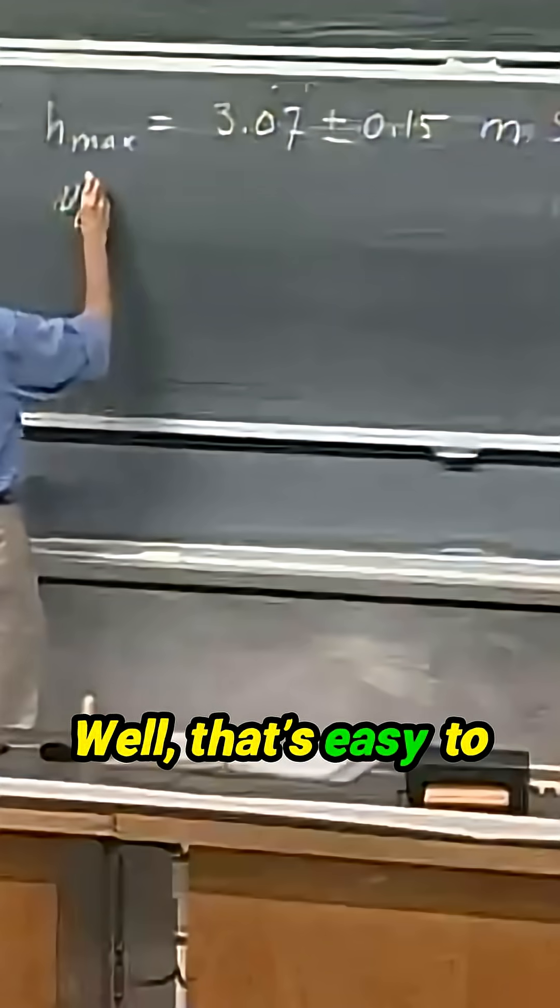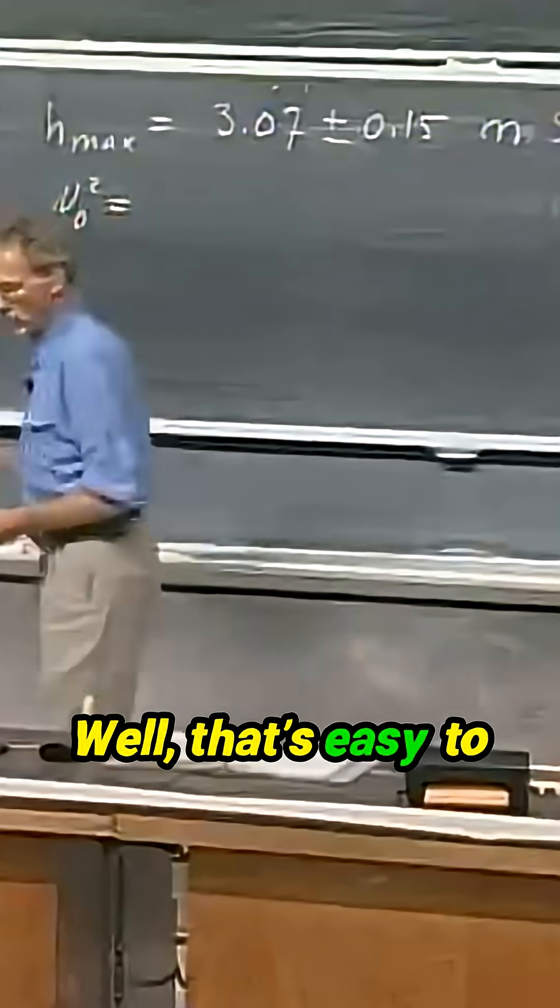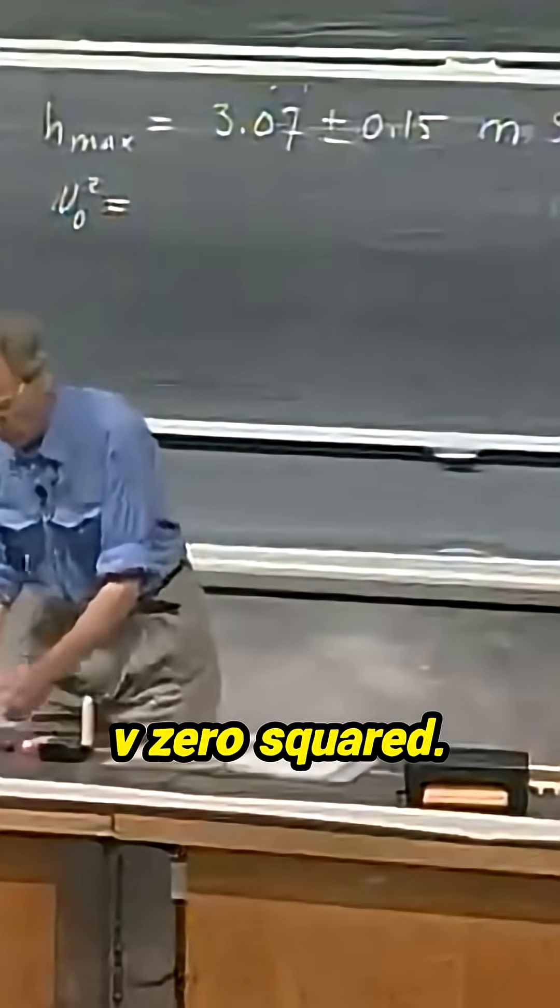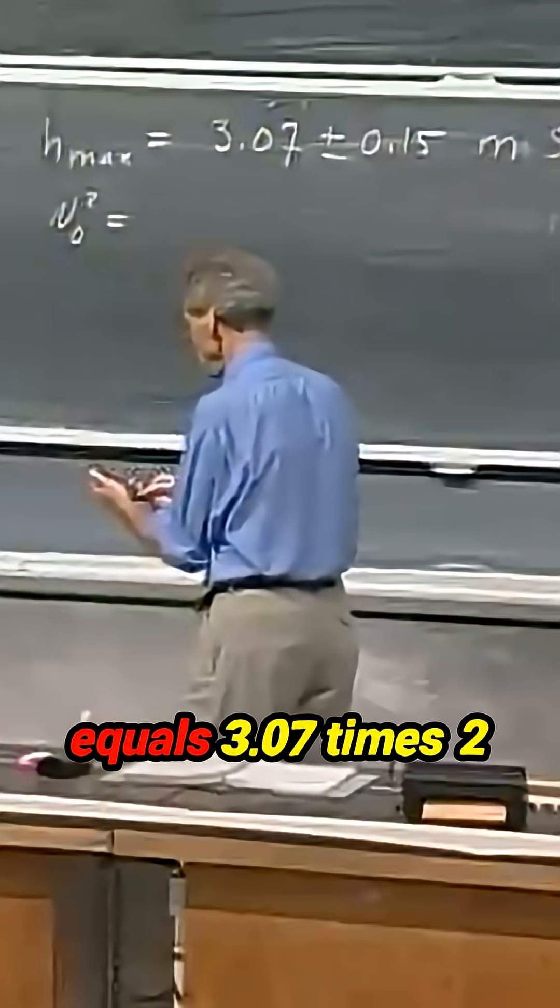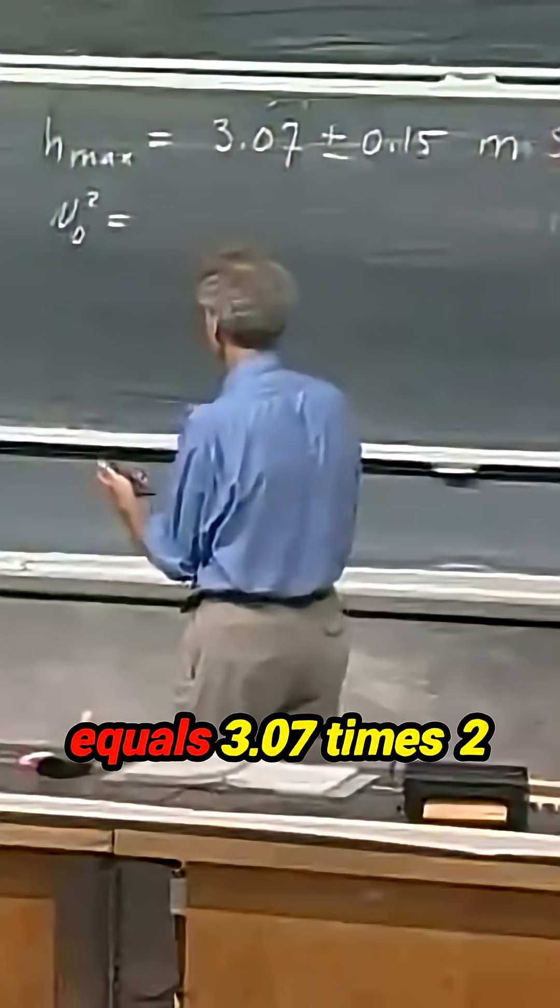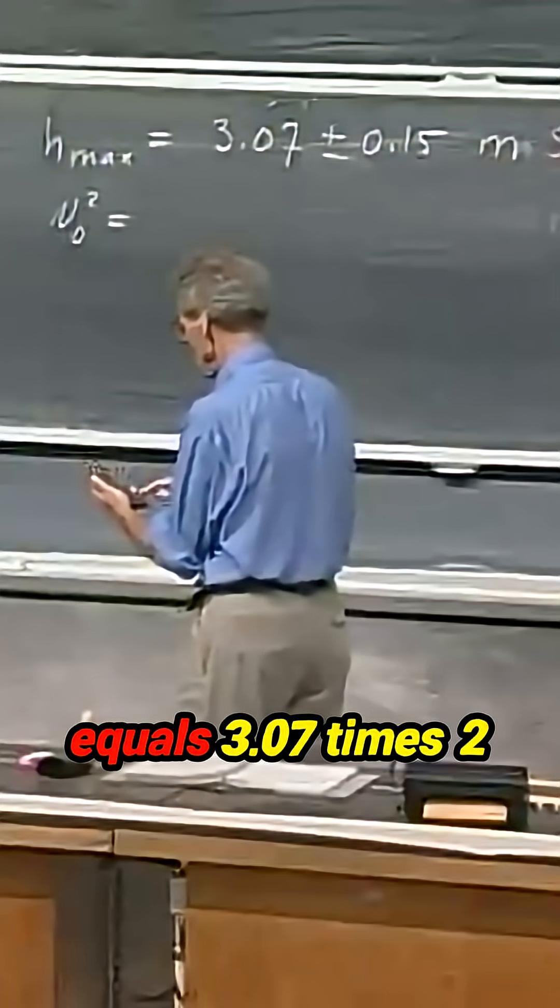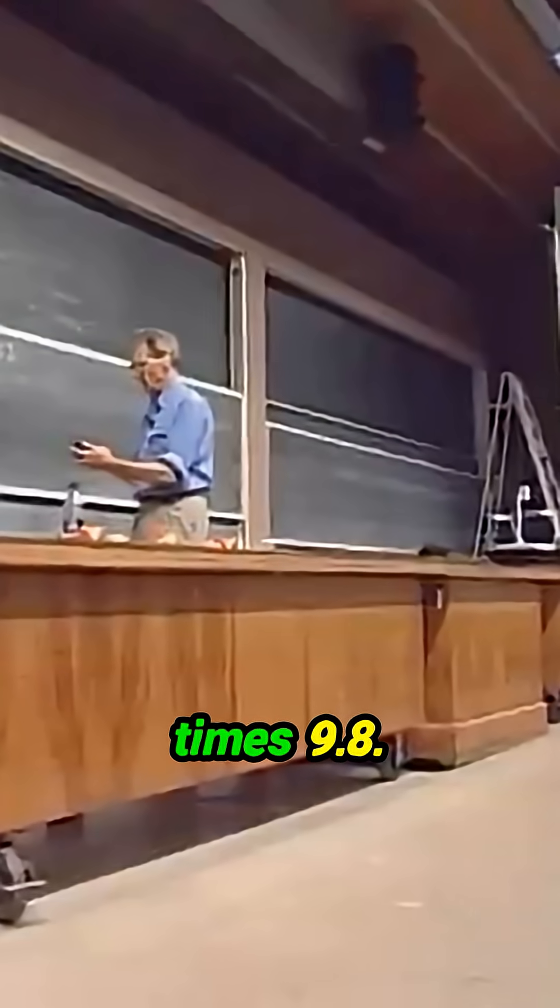So what now is V zero squared? Well, that's easy to calculate now. V zero squared equals 3.07 times 2 times 9.8.